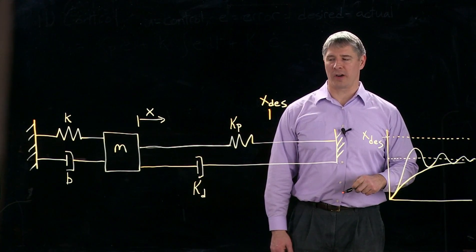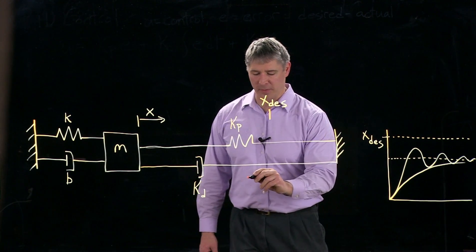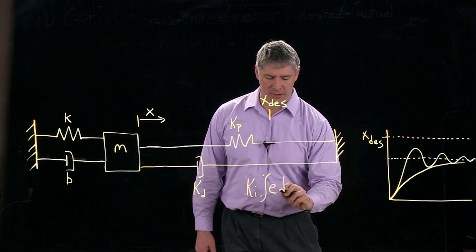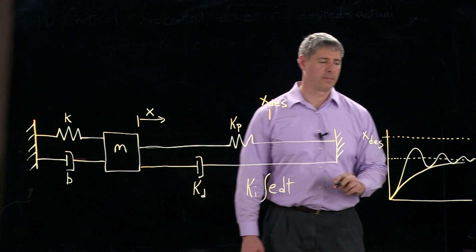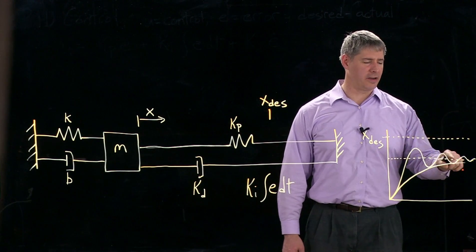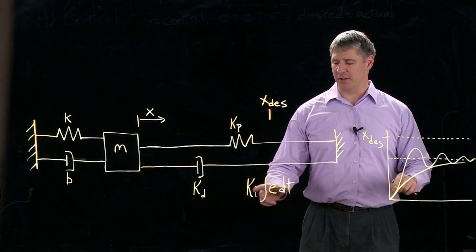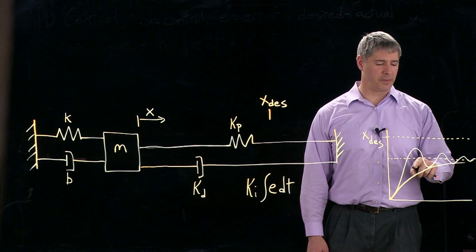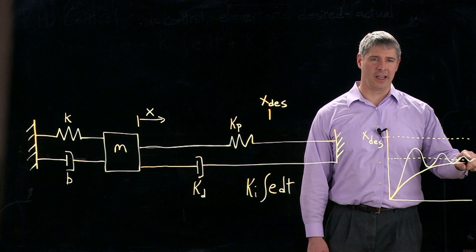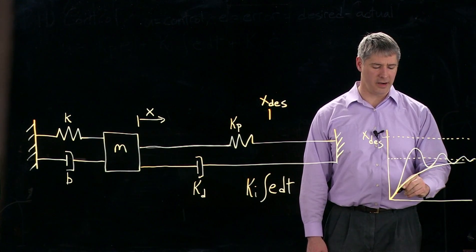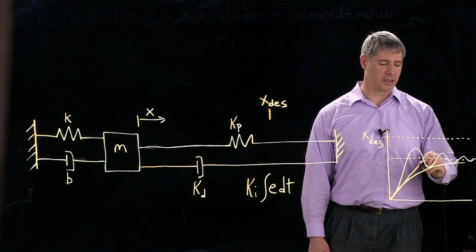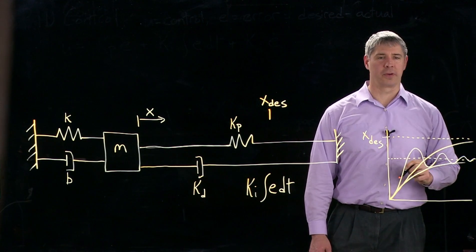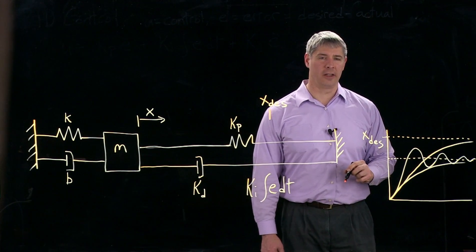So the last thing we can try is the integral term. So remember we have this K sub I times the integral of the error. And so what happens here is that as this error integrates over time, there's going to be a force developing that's trying to cancel it out. So the effect here is going to be, instead of settling at this steady state error, the integral term should cause it, if implemented properly, to approach the actual desired value.